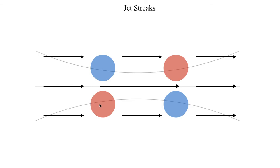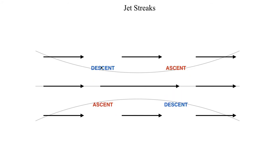So just using the concept of ageostrophic wind, we can explain how we can get rising motion or divergence aloft — colored in the red circles here — and how we can get convergence aloft or sinking motion — colored in the blue circles here. Another thing I want to introduce while we're discussing jet streaks is the anatomy of a jet streak, that is how meteorologists often refer to particular regions within jet streaks.